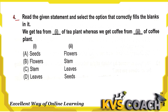Question 4: Read the given statement and select the option that correctly fills the blank. We get tea from the leaves of a plant, whereas we get coffee from seeds. So coffee is from seeds and tea is from tea leaves.